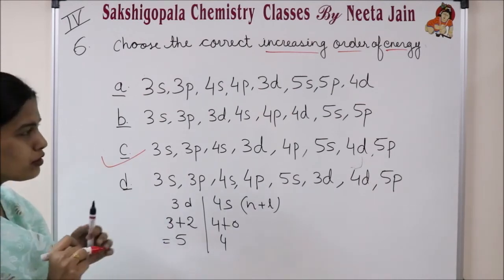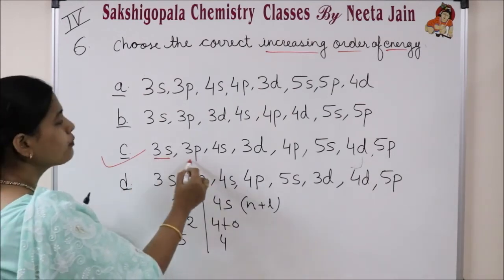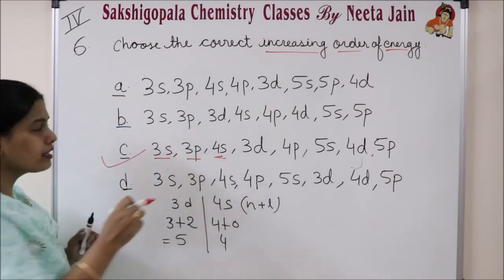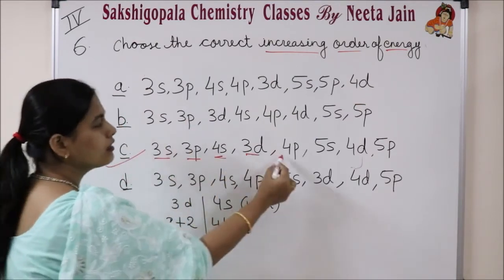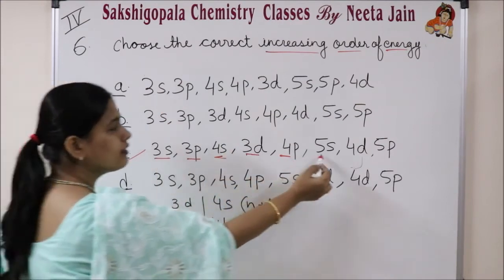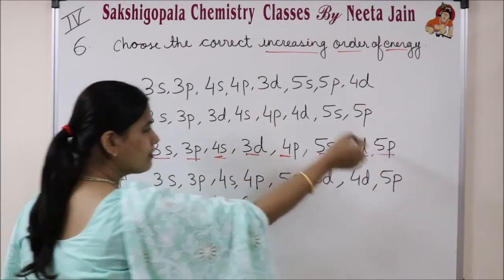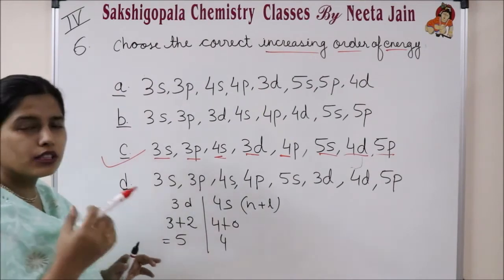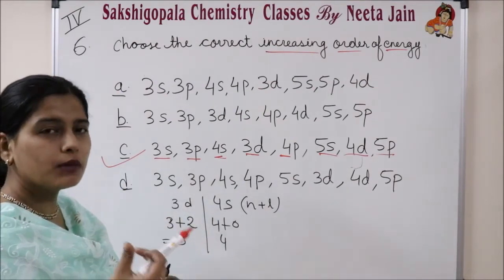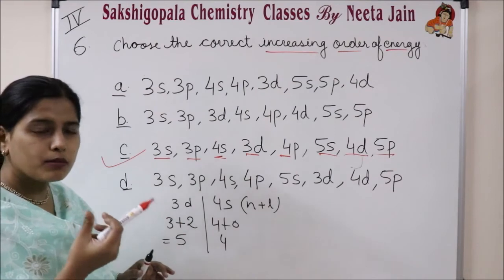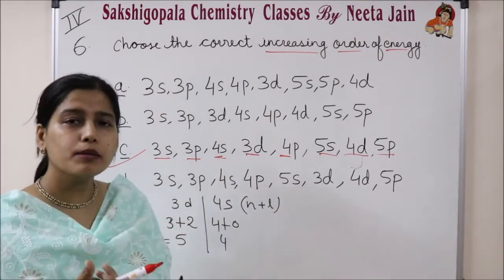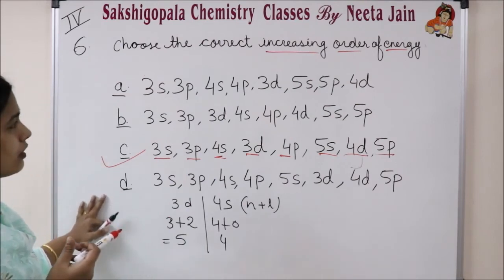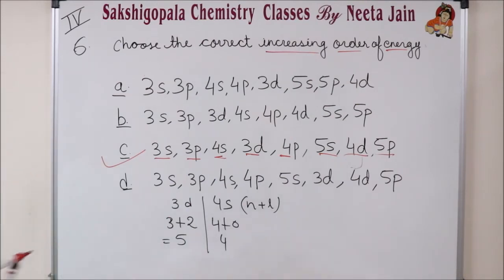The increasing order is: 3S, then 3P, then 4S, then 3D, then 4P, then 5S, then 4D, and finally 5P. These questions are time-consuming and you should be very careful — often we know the right answer but mark the wrong option.